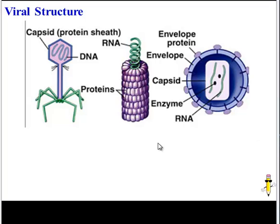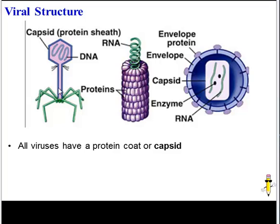Let's start by looking at the structure of a virus. It's important to note that there are many different viruses with different shapes, but there are some commonalities to all viruses. One commonality is that all viruses have a protein coat called a capsid. Here's a capsid for a bacteriophage, a virus that infects bacteria. Here's the capsid of the tobacco mosaic virus, which infects plants. And here's the capsid of HIV, which infects humans.